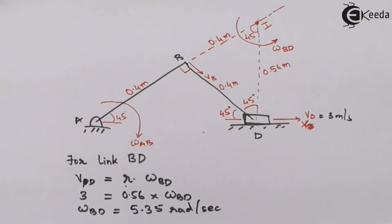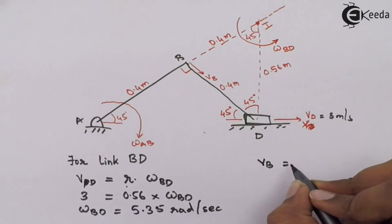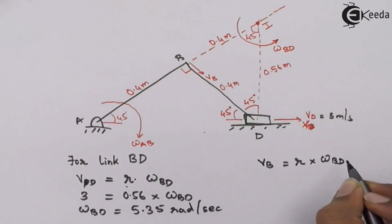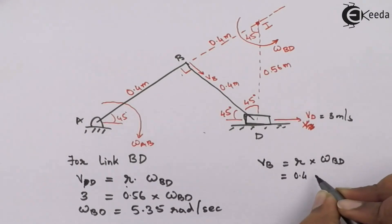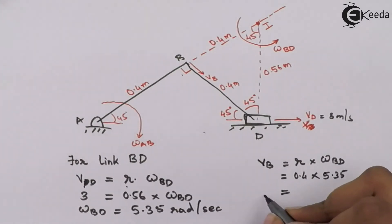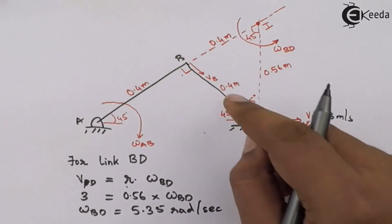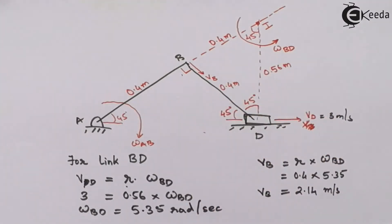Using the same angular velocity, I can find the velocity of end B. VB = IB × omega BD. The radial distance IB is 0.4 meters, so VB = 0.4 × 5.35, which gives VB as 2.14 meters per second. So I have the velocity of B and the angular velocity of link BD.